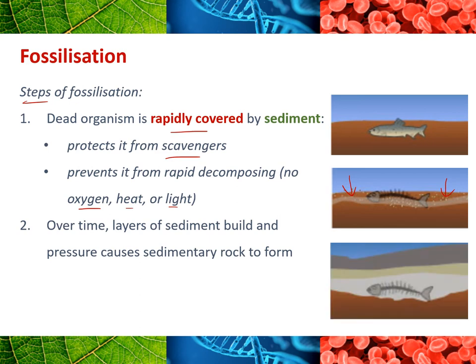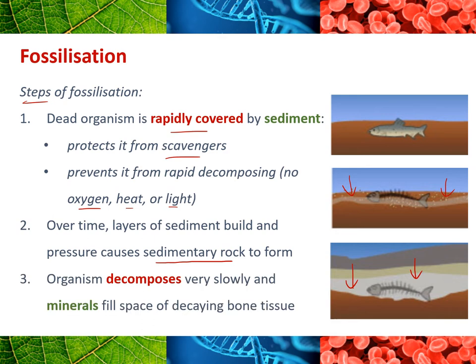Over time, layers of sediment stack up on top, forming sedimentary rock — the pressure of that sediment causes rock to form over really long periods of time. While that rock is forming, the organism decomposes very slowly and minerals take the place of where that tissue was. Fossils most commonly occur in bony and hard tissue, including teeth. Soft tissue decomposes very quickly, so while fossils of soft-tissue organisms do exist, it's much more likely to happen for animals that had a lot of bone or hard tissue.